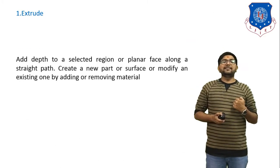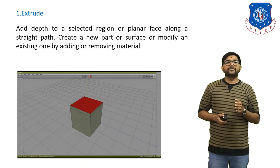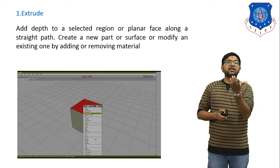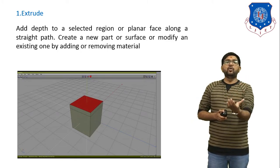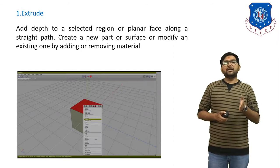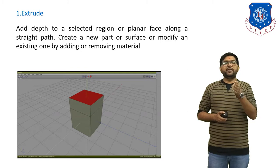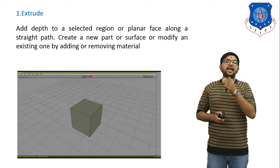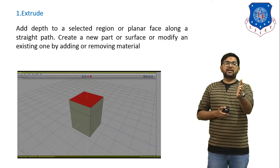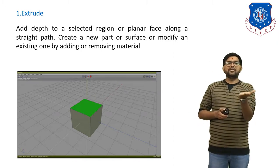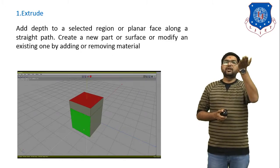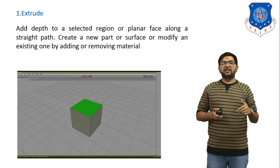The first feature is extrude. In extrude, we add depth to a selected region or planar face along a straight path to create a new part or surface, or modify an existing one by adding or removing material. From the animation below, you can understand that one rectangle is extruded to generate a 3D part. You draw any surface, give an extrude value, and that surface is extended in that direction.